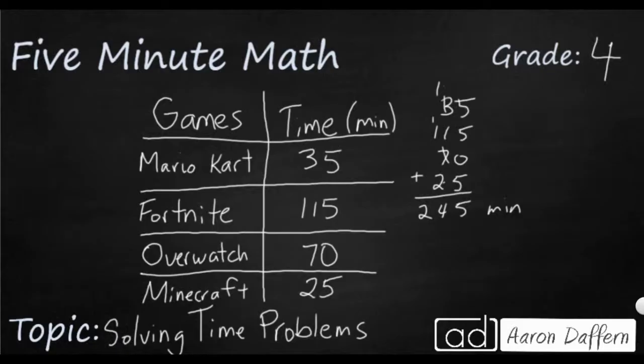But guess what? Typically when we get numbers over 60, when it becomes longer than an hour, we don't report time in minutes. We report it in hours and minutes. So how do we convert 245 minutes into hours and minutes? So that's the tricky part.